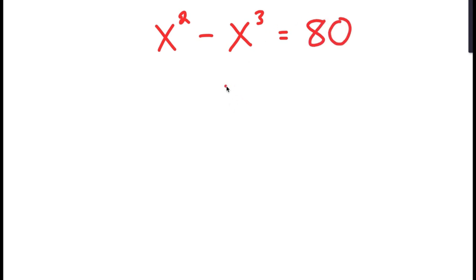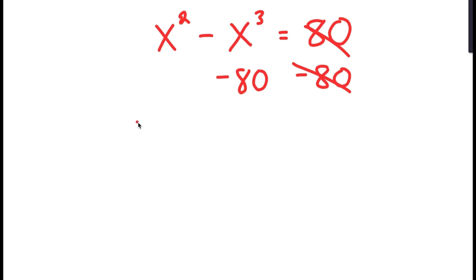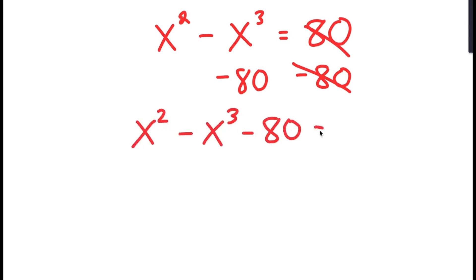To solve this equation, I'm going to first start by subtracting 80 on both sides. So now I get x to the power of 2 minus x to the power of 3 minus 80 is equal to 0.